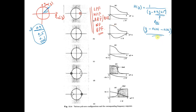Then find out the frequency response and the amplitude response. Accordingly, also find out the amplitude response for radius of 0.5 and radius of 0.1. We are considering that there are no zeros in this system.